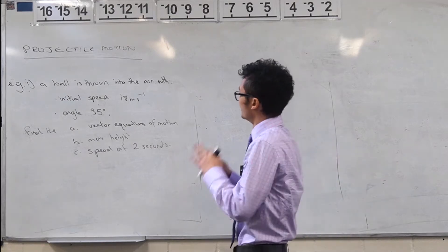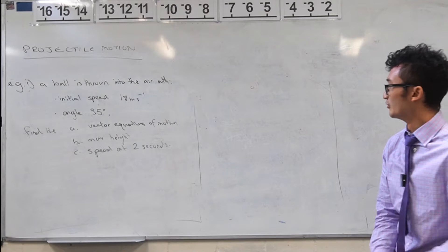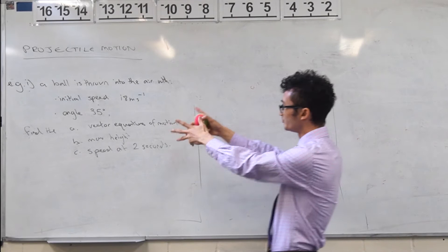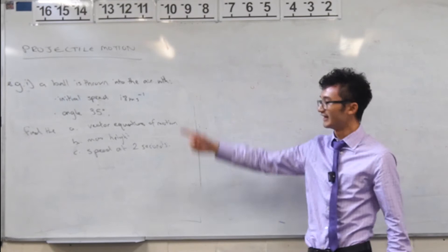Alright, so projectile motion. We kind of talked a bit about what it involves and we're looking at things launching up or things being thrown at us. In this case you've got a ball being thrown into the air and for these kind of introductory questions we'll get these kind of initial conditions. They're telling you what's happening. So initially it's being launched at 18 meters per second at an angle of 35 degrees.